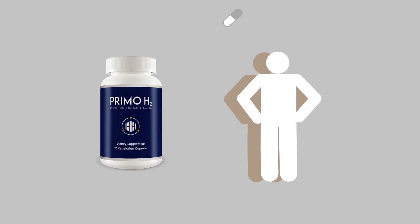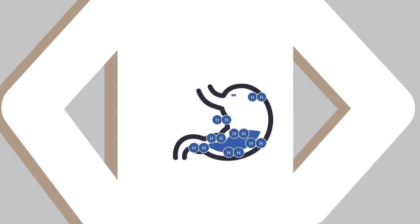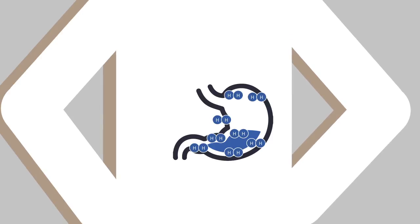How does it work? When you take a capsule of PrimoH2, it goes inside your stomach and reacts with the fluid to produce molecular hydrogen, the most powerful antioxidant in existence.